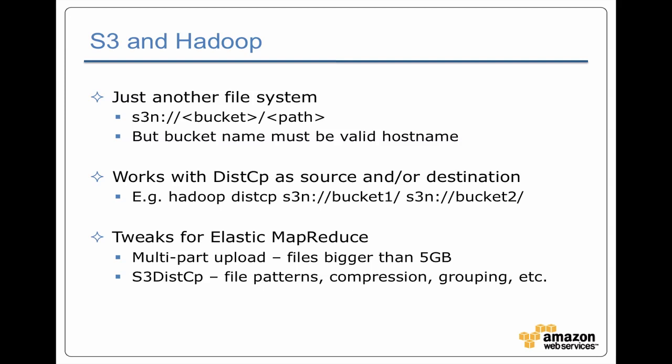Amazon has added enhancements to the S3 support already in Hadoop. For example, if you're writing files bigger than five gigabytes, it just works without any extra effort because they support multi-part upload for files larger than five gigabytes. They've also recently released their own version of the distcp tool called S3 distcp, which adds additional functionality — things like file patterns (so you can copy only files ending in .zip), specifying that the output should be compressed, and combining files in different ways by specifying grouping. This lets you do things out of the box that would normally have required writing a custom Hadoop job.